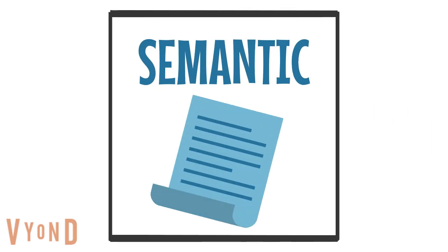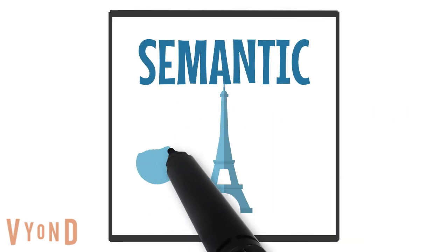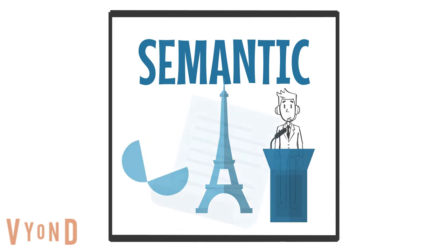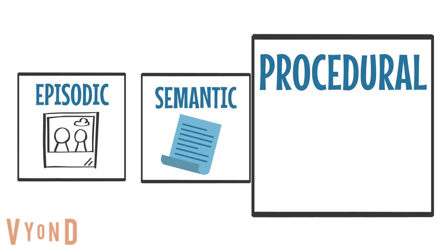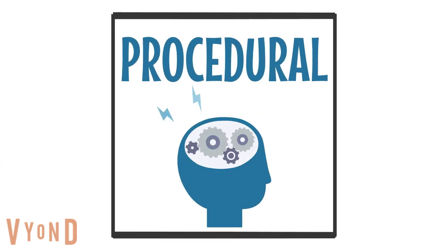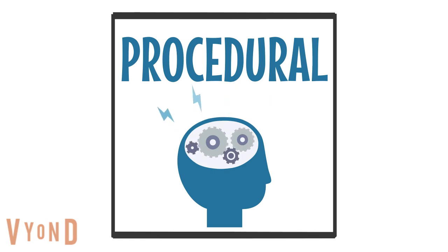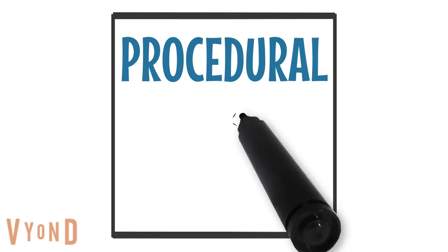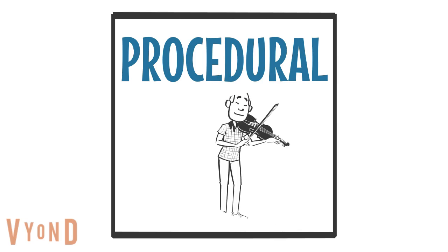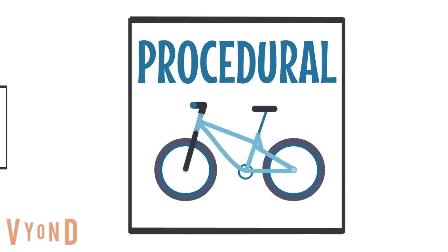Semantic memory is where we keep facts and knowledge, like what the capital of France is, when your birthday is, and who the prime minister is. Procedural memory is where we store information on how to do things. These are things we do so often and have done so many times that they become automatic — so walking, cycling, reading, and playing an instrument are all stored in our procedural memory.